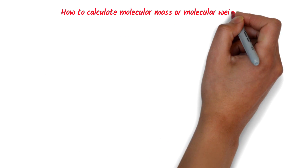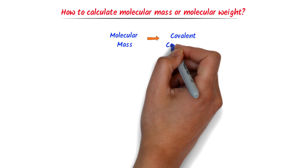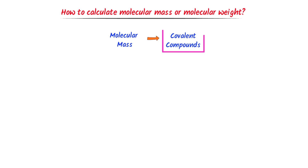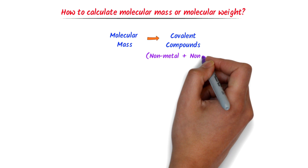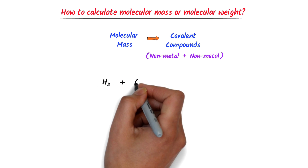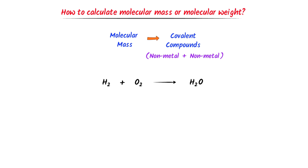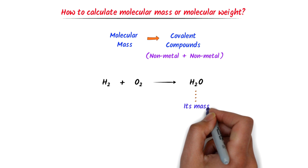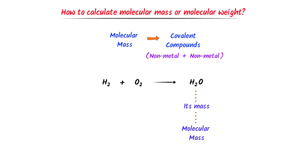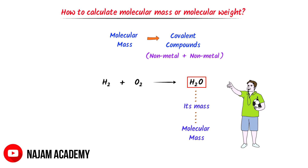How to calculate molecular mass or molecular weight? Firstly, remember that molecular mass is usually associated with covalent compounds. Covalent compounds are formed when non-metals react with non-metals. For example, hydrogen gas and oxygen gas react together to form H2O — a molecule of water — and its mass is known as molecular mass. Therefore, note that molecular mass is the mass of molecules having covalent bonds.